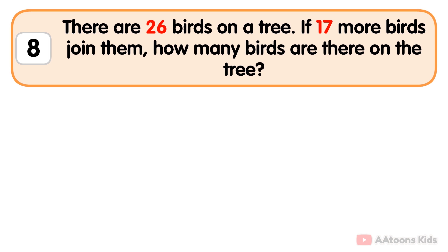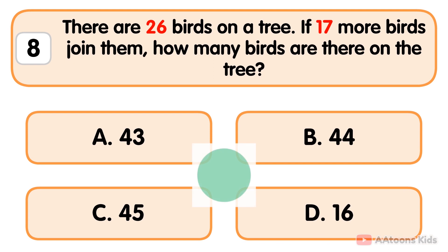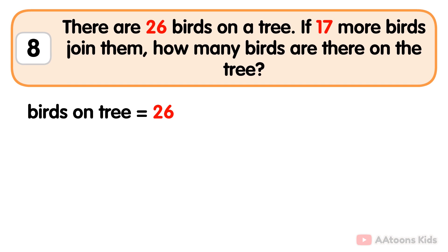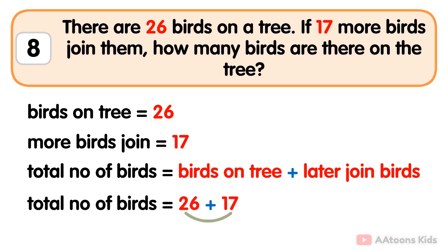There are 26 birds in a tree. If 17 more birds join them, how many birds are there in the tree? 43. The total number of birds on the tree is 26 and the number of birds joining is 17. To find the total number of birds, add the birds on the tree and the joining birds: 26 plus 17 is 43. So the total number of birds on the tree is 43.